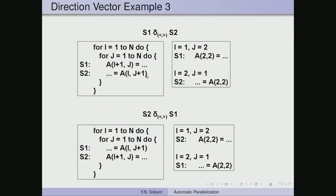This third example with two loops is supposed to show the less than and greater than direction vector. A greater than direction vector means computed in a later iteration but used in an earlier iteration. This does not seem to make sense in single loops, but it does when we consider doubly nested loops.